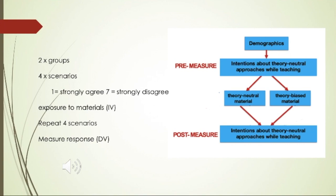The other group, a control group, will not receive exposure to that material. However, they will receive exposure to heavily biased materials. While it contains cognitive theory material, it also acts to devalue cognitive theory and strongly promote biological theory. This bias should be very obvious in the materials to the participants. This automatic assignment to groups will be done as participants are taken to the survey website.